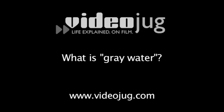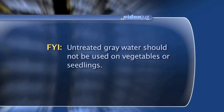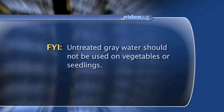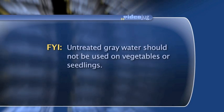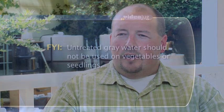What is gray water? Gray water is any waste water from your house except for what comes from the toilet. So anything that's coming from your sink, from your shower, from your laundry is what's considered gray water.